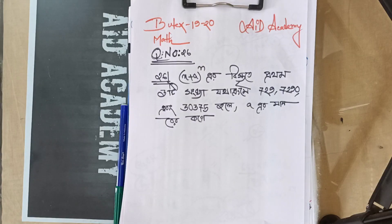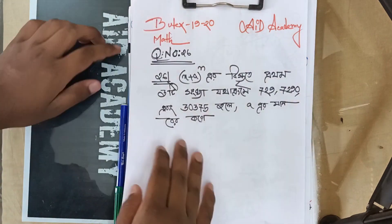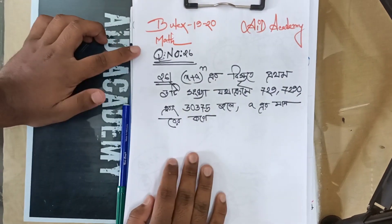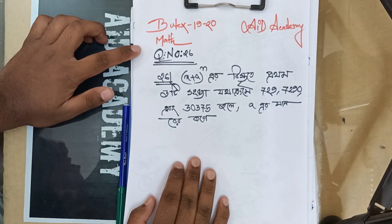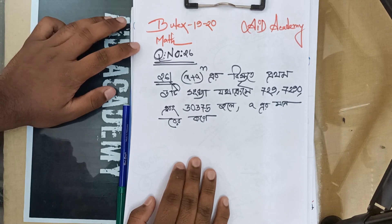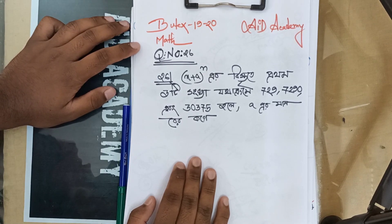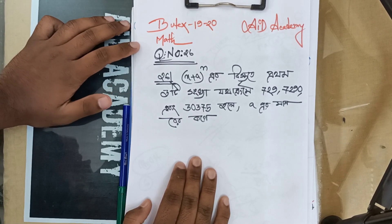This is question 26. The problem involves x plus a, whole to the power n. The first given value is 729, the second is 7290, and the third is 30375.